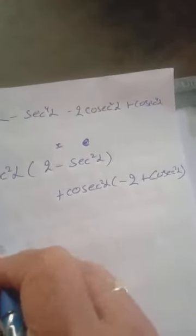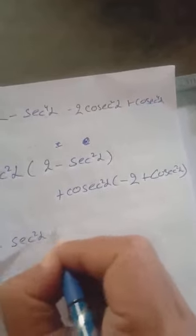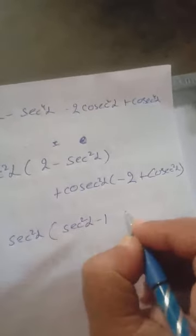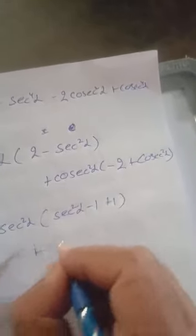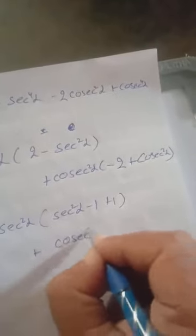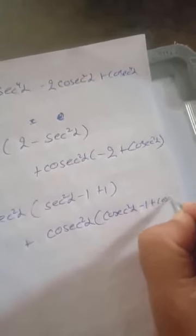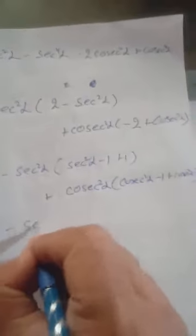Plus cosecant square alpha, minus 2 plus cosecant square alpha. Taking common: secant square alpha minus 1, plus cosecant square alpha minus 1, plus cosecant square alpha. So I will get secant square alpha into tan square alpha, plus 1.